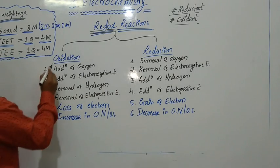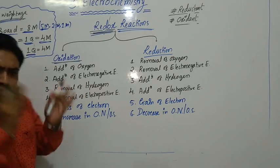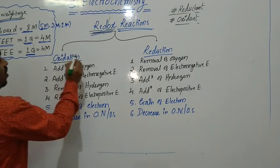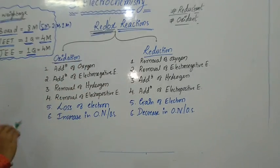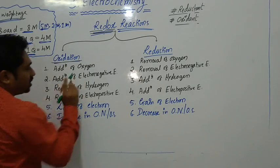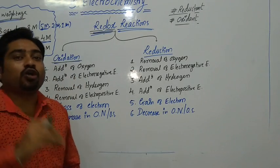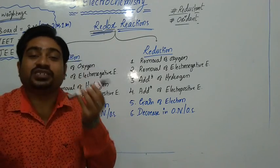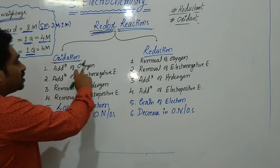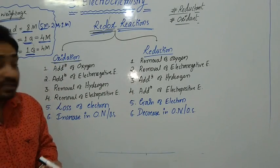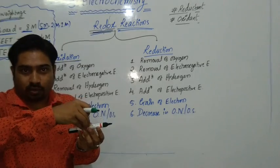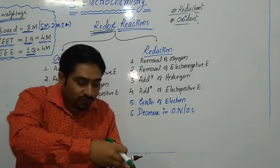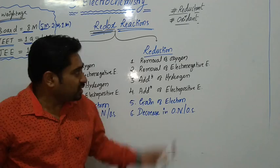Let us define oxidation and reduction simultaneously and compare them. Oxidation means the addition of oxygen to an element or a compound. The opposite, reduction, means the removal of oxygen from a compound or an element. So addition of oxygen is oxidation and removal of oxygen is reduction.